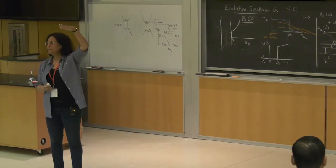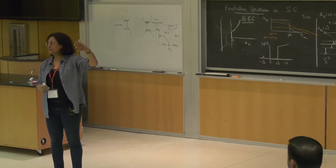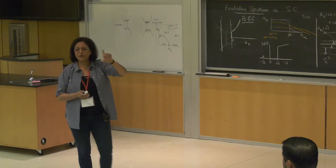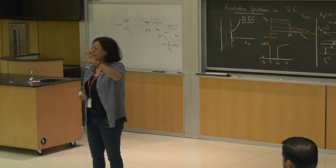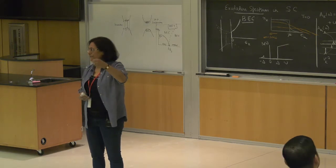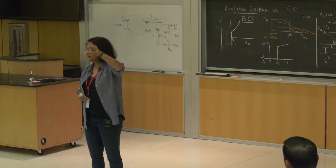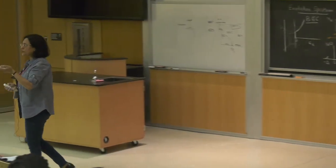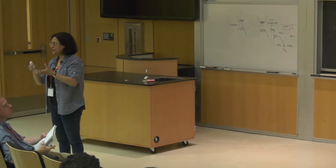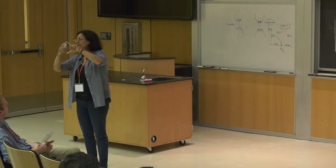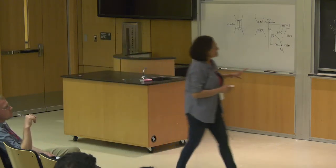The difference is that this Mott insulator is what I would call a hardcore boson Mott insulator. Usually in a Mott insulator you are at integer filling — if you have two sites, that would have been two bosons — but these bosons are hardcore because they ultimately are made up of fermions, and a single boson lives on both sides of the rung.